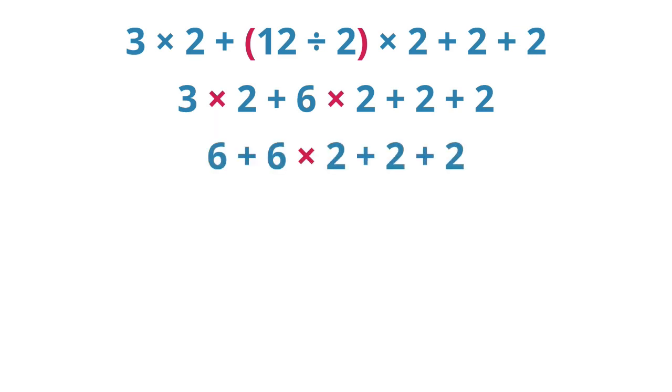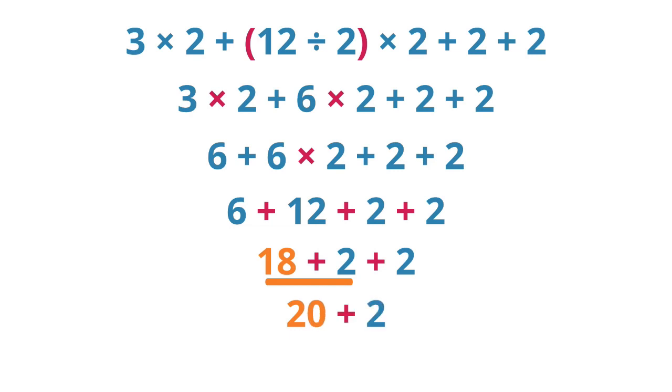Still dealing with multiplication and division, we multiply the 6 and 2 for 12. Now, we add and subtract from left to right because there is no multiplication or division. We start with the sum of 6 and 12. Next, we add the 18 and 2 for 20. Finally, we add 20 and 2 for a result of 22. Frank's order costs $22.